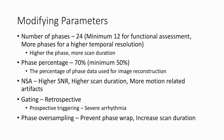A number of parameters can be modified while obtaining cine images. The first is the number of phases — we routinely acquire 24 phases per cardiac cycle for functional assessment. However, in uncooperative patients and in arrhythmias it can be reduced to up to 12 phases per cardiac cycle, below which functional assessment is unreliable. The higher the number of phases, the longer the scan duration, but the smoother the cine images will be.